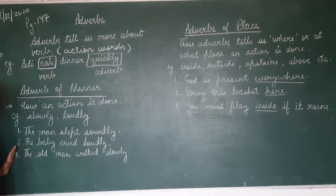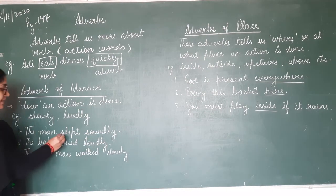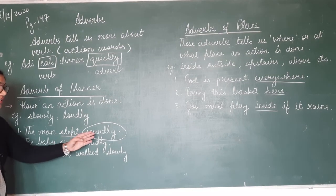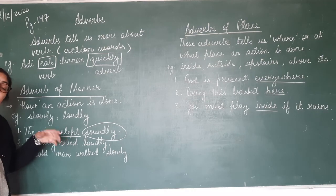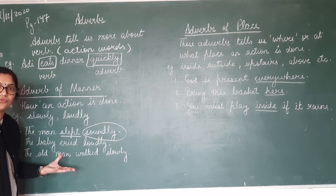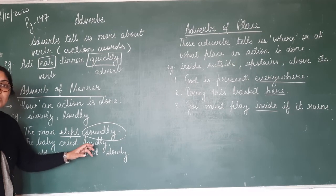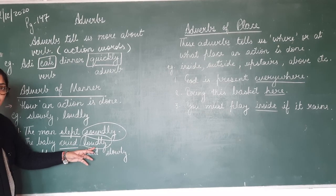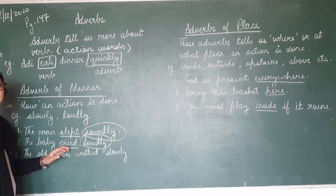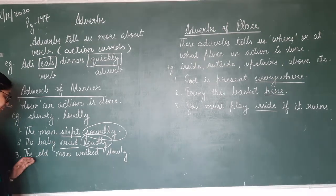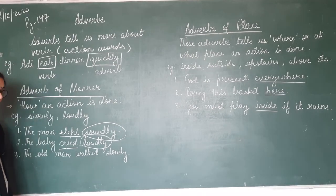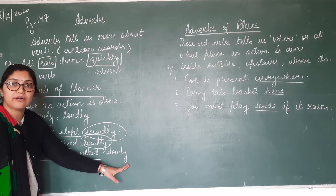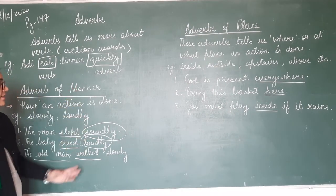You can understand by these sentences. 'The man slept soundly.' Ab isme 'slept' aapka verb hai aur 'soundly' is your adverb. Toh aapko pata chala soundly se ki jo man tha, woh kaise soya — araam se soya, soundly matlab achi neend li. 'The baby cried loudly.' Ab jo baby hai, usne cry kiya — kaise kiya? Loudly kiya, bahut zor se. 'The old man walked slowly.' Toh aapko pata chal raha hai ki the old man walked slowly, woh kaise chal raha tha — slowly. So I hope adverb of manner is clear.